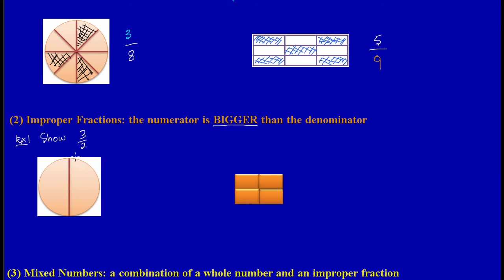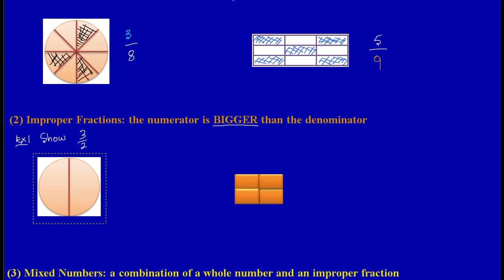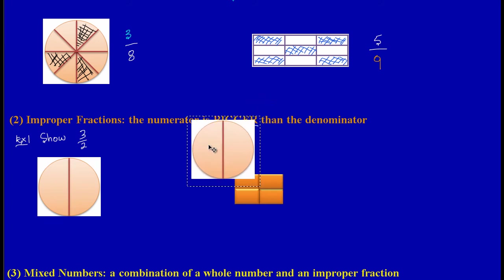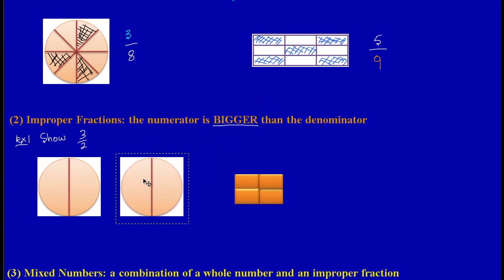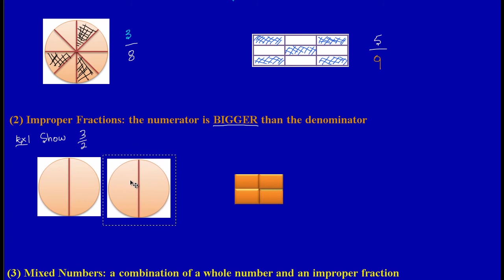By intuition the numerator tells us the number of parts we're speaking about, but if you look at this hole there are only two parts total. This suggests that we would need another diagram to show three out of two, so let's get another diagram and place it right beside the first.